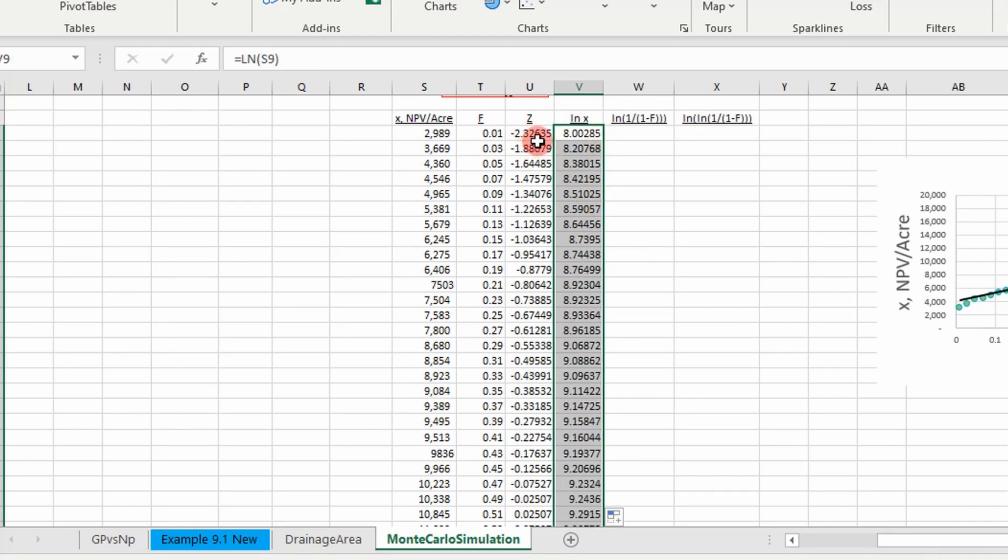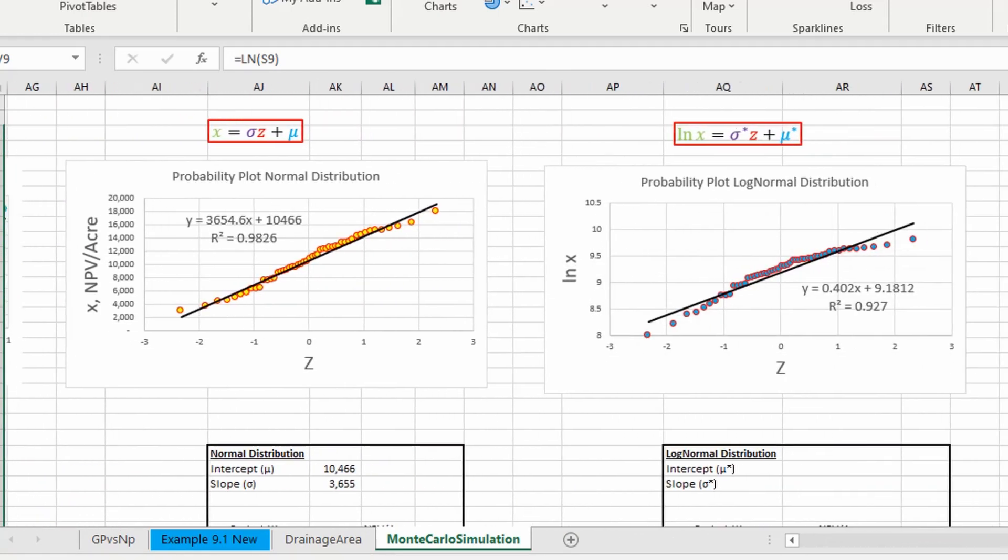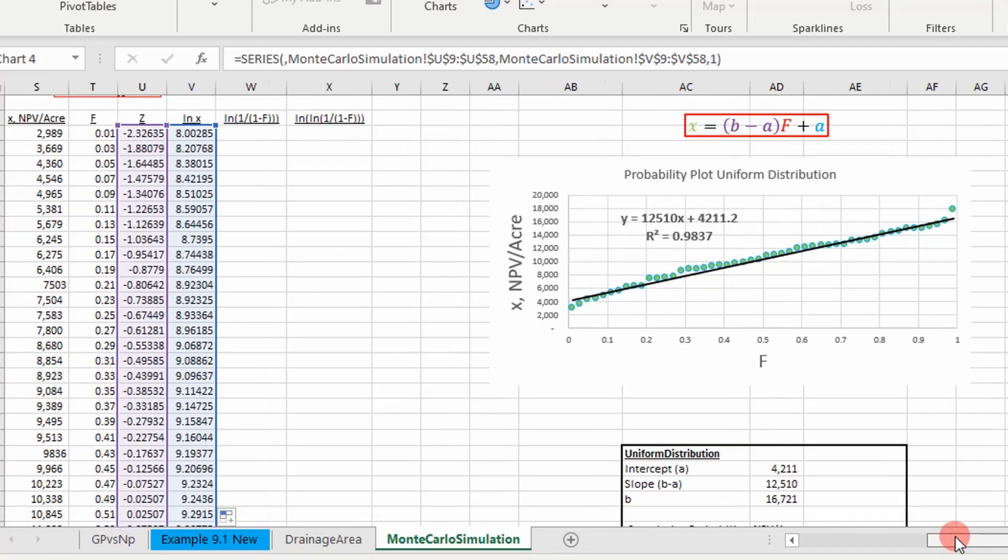And then if we plot our z-score versus the natural log of our data values or random variables, we plot that on a line right here, so it's already been plotted.